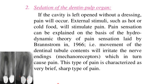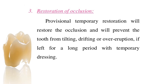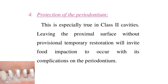Third, restoration of occlusion: provisional temporary restoration will restore the occlusion and will prevent the tooth from tilting, drifting, or over-eruption if left for a long period with temporary dressing. Fourth, protection of the periodontium: this is especially true in Class II cavities, where leaving the proximal surface without provisional restoration will invite food impaction with its complications on the periodontium.